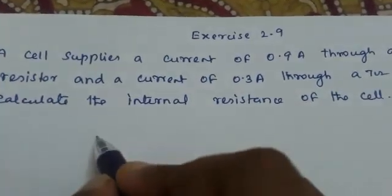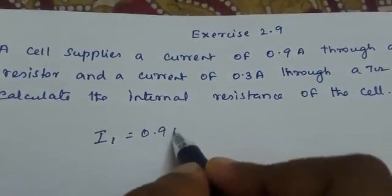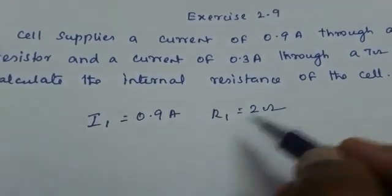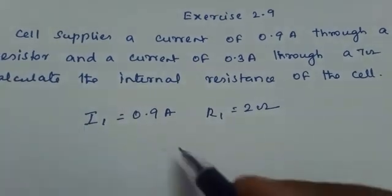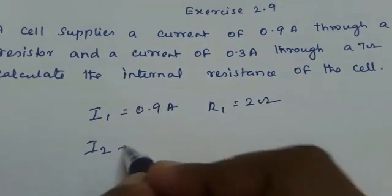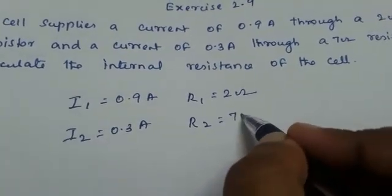What is given is a cell is supplying a 0.9 ampere current through a resistor of 2 ohm. So I1 is 0.9 ampere and R1 is equal to 2 ohm. And current of 0.3 ampere through another resistor 7 ohm.